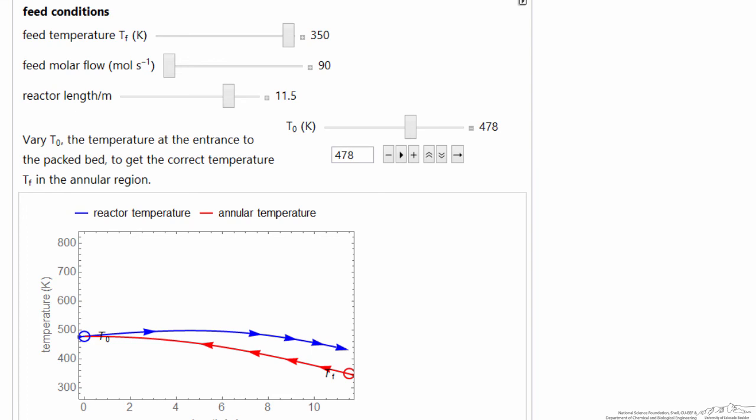The idea is you can change these variables to get a better physical understanding of the behavior of this autothermal reactor where there's interaction between how much reaction takes place and how hot the feed is.